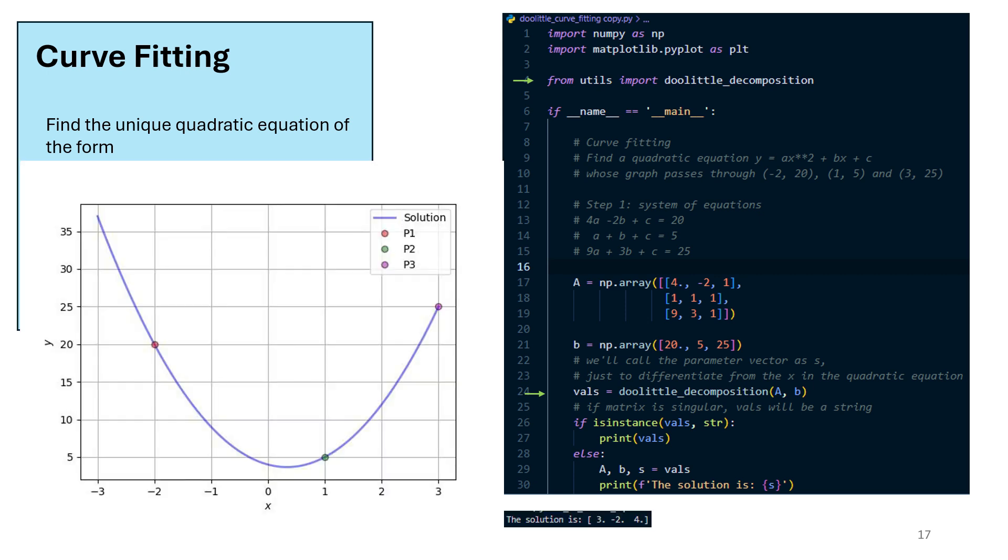The solution is again the same. That is a quadratic equation with a equal to 3, b equal to minus 2, and c equal to 4. This is all about Doolittle's decomposition. I hope you liked this video. Thanks for watching.